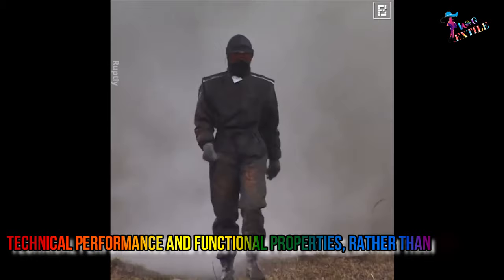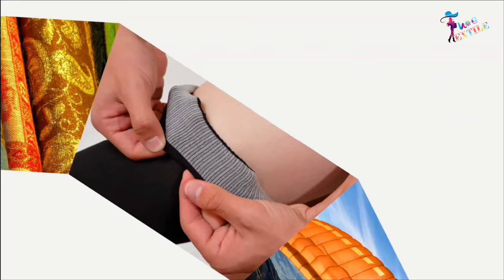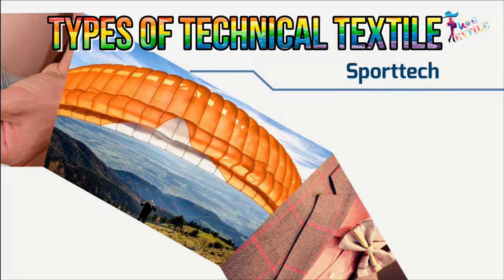Technical textiles are defined by their technical performance and functional properties rather than their aesthetic and decorative characteristics. Depending on functionality and properties, technical textiles have a variety of categories.